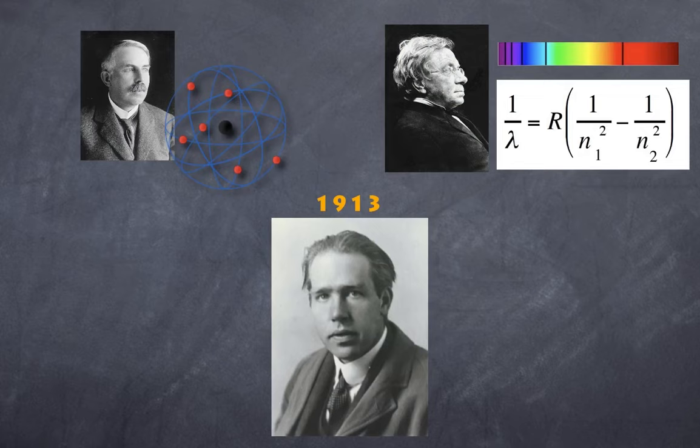Rutherford's gold foil experiment helped us understand the planetary model of the atom—namely, we have a nucleus in the center where all the mass is predominantly located, and the electrons are spinning around. But that has a problem because those electrons would be accelerating and therefore releasing energy, and the electrons should be spiraling in.